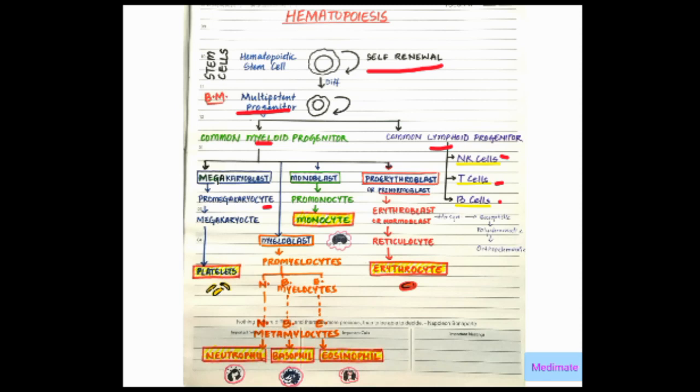Similarly, in myeloblast: pro-myelocytes, then myelocytes—neutrophilic, basophilic, eosinophilic—then metamyelocytes. Meta means after. Since you can remember that myeloblast gives rise to more types of cells.